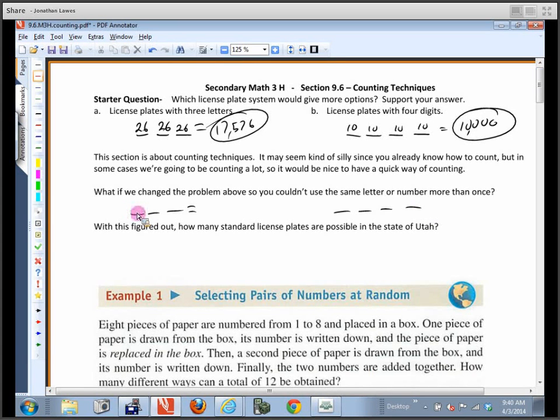So how many choices do I have for this first letter? I've got 26 choices for that one. Once I choose a letter here, once I choose an A, can I use an A again? Nope. So how many choices here? Only 25. Now I've chosen two letters. So let's say I chose A and I chose B. How many choices do I have for this one? Only 24.